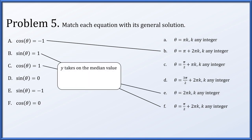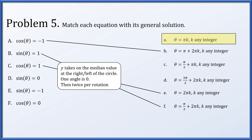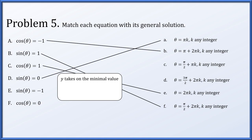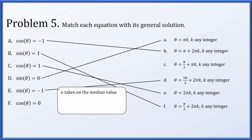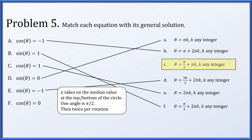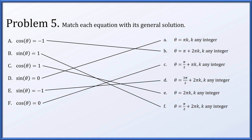For sine of theta equals 0, the y-coordinate is zero at the right and left of the circle, happening twice per rotation. One such angle is 0, and solutions recur every half rotation: 0 plus pi times any integer. For sine of theta equals minus 1, y is minimum at the bottom, angle 3 pi over 2, once per rotation: 3 pi over 2 plus 2 pi times k. For cosine of theta equals 0, x is zero at the top and bottom, so starting at pi over 2 and repeating every half rotation: pi over 2 plus pi times any integer. All six equations are now matched to their solutions.